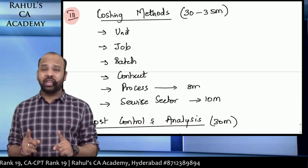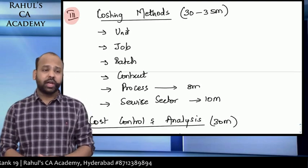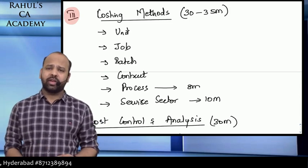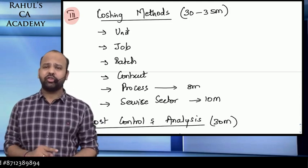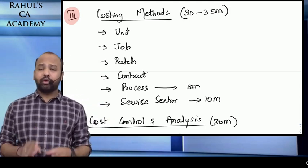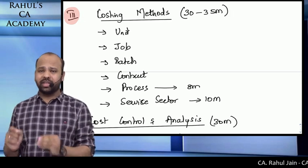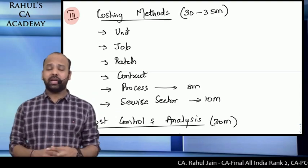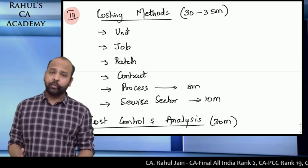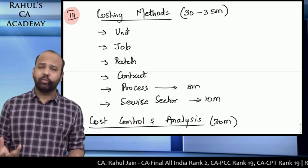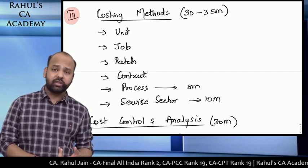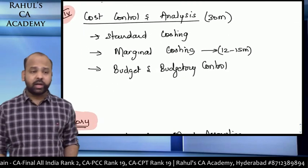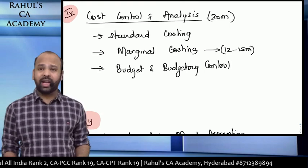The third division is Costing Methods, which will fetch around 30 to 35 marks in the examination. Under this, you have job costing, batch costing, process costing, operating costing, contract costing, joint products, by-products, and service sector costing. The most important topic here is service sector costing, which has been constantly coming for 10 marks in every paper. Process costing is the next most important topic — all costing methods matter, but process costing has a higher chance of appearing.